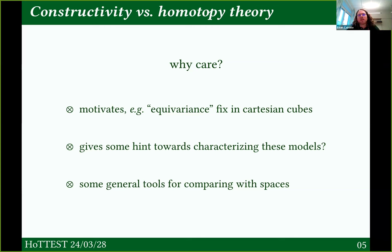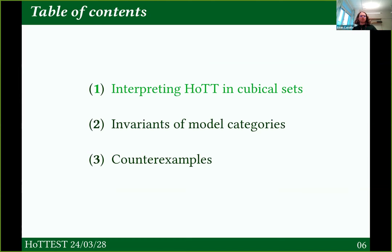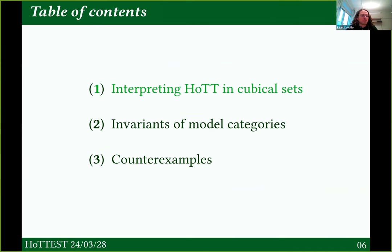While working through this, we also see some general tools for comparing things with spaces — how to show that something can't be equivalent in some way to standard homotopy theory. So I'll talk a little bit about that. The plan is: first I'll review some particular emphases on how we interpret homotopy type theory in cubical sets, then I'll talk about invariance of model categories — which are the presentations of higher categories we interpret HoTT into — and then I'll get to the concrete counterexamples.